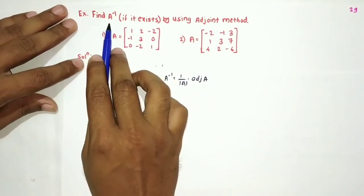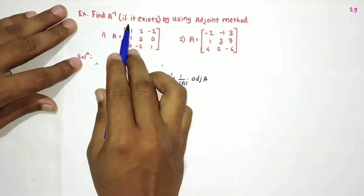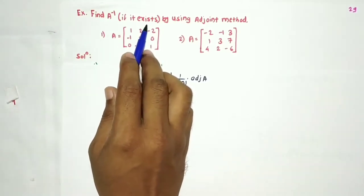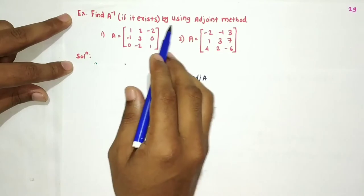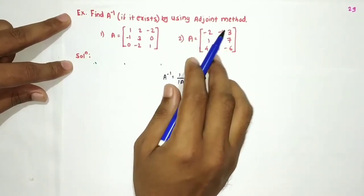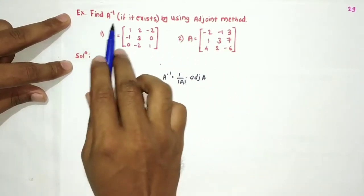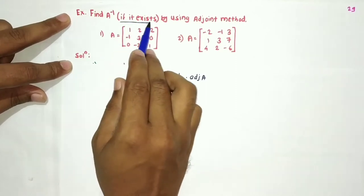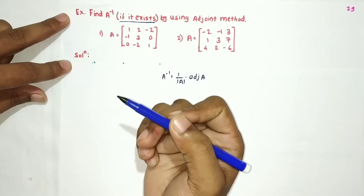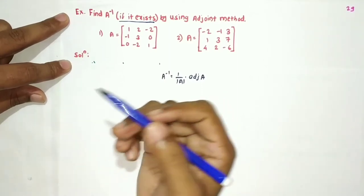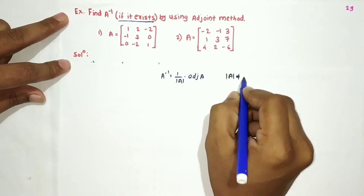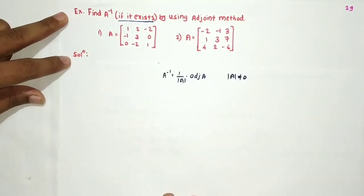The question says: find A inverse if it exists, using the adjoint method. A matrix's inverse exists only when its determinant is non-zero. So first we check if the determinant is non-zero.